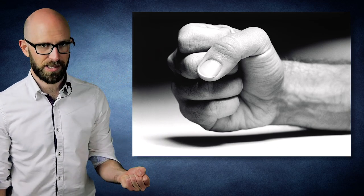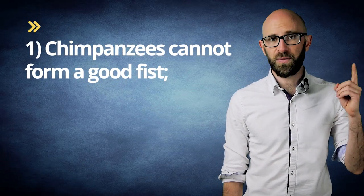adherents of this theory note that the human hand only becomes a truly strong weapon when it is formed into a fist. They also identify several facts in support of this. First, chimpanzees cannot form a good fist.